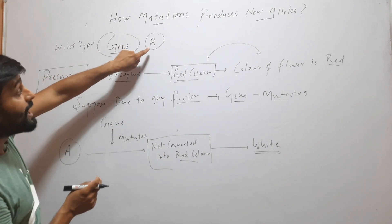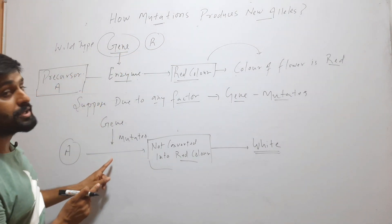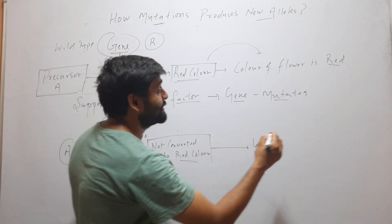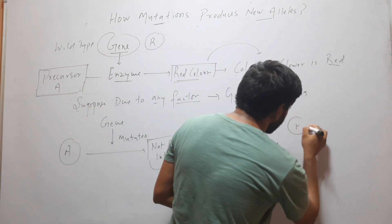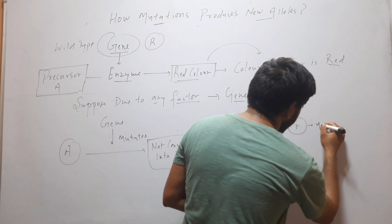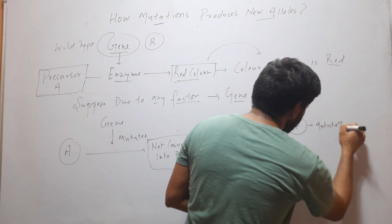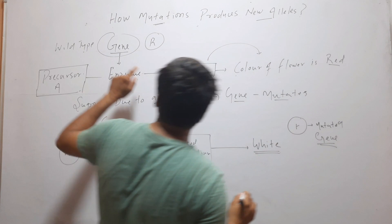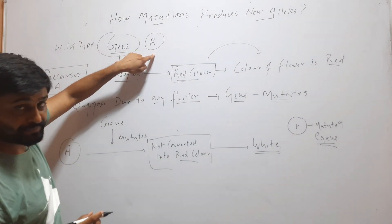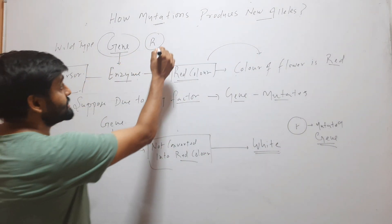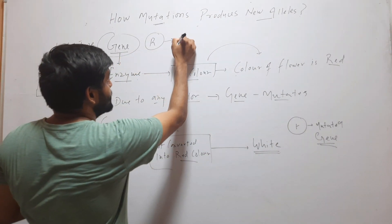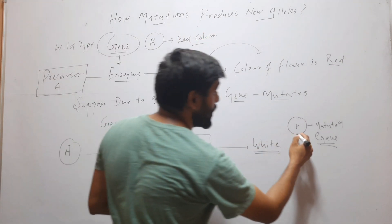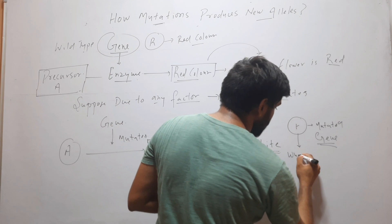So now we have another form of that gene. This capital R gene is the wild type gene, and the mutated gene we will call small r. Capital R causes red color and small r causes white color.